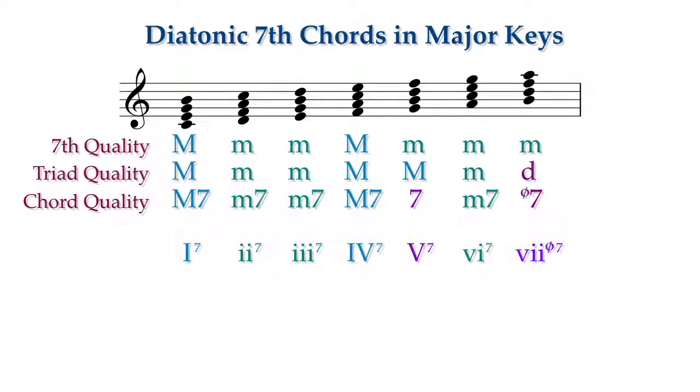These are all of the diatonic seventh chords in a major key. The tonic seventh chord is rarely used in common practice. Since the tonic is the point of ultimate stability, the dissonance created by adding the seventh is contrary to its function.